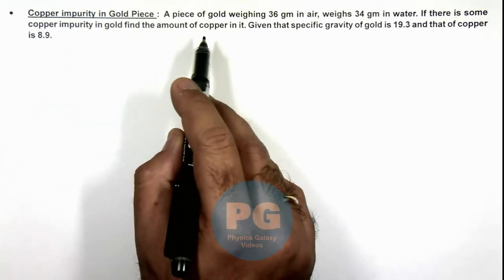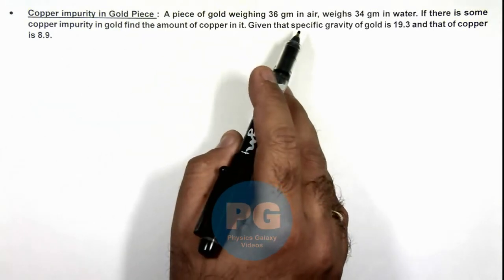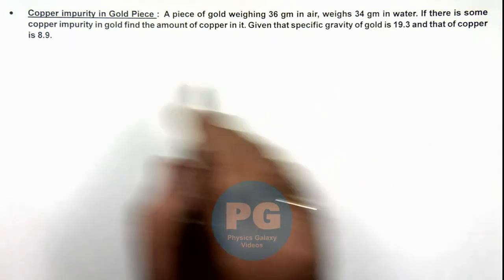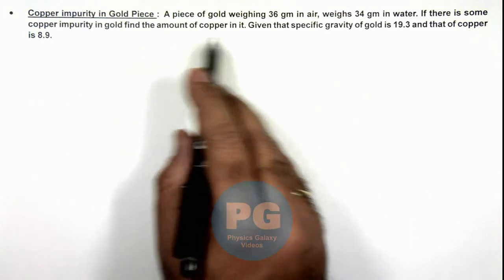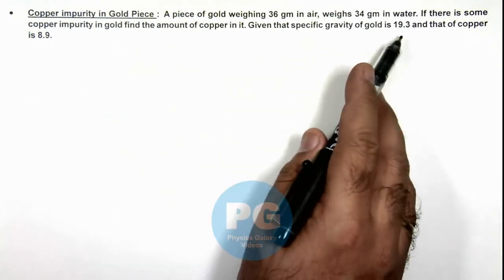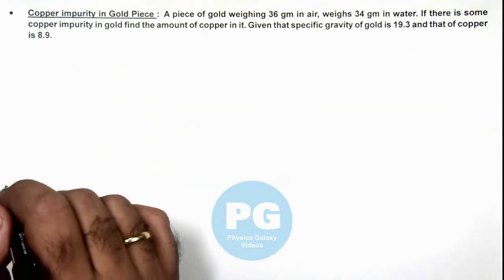We are given that a piece of gold weighing 36 grams in air weighs 34 grams in water. If there is some copper impurity in gold, we are required to find the amount of copper in it, given that the specific gravity of gold is 19.3 and that of copper is 8.9.